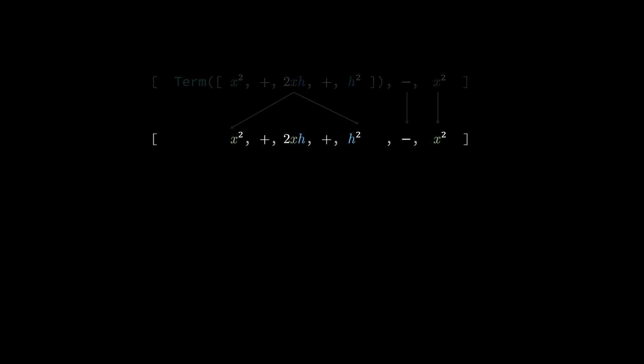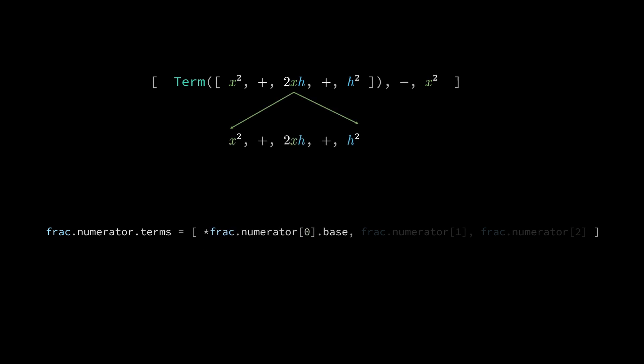The minus and x squared terms will continue on as before. The new array for the numerator drops the term component, and with it, the parentheses are dropped as well. Then, we can reconstruct the numerator again passing in the 2xh and h squared elements, and this will drop out the x squared terms. We can use the terms attribute of the numerator to reinitialize its array. The unpacking operator will place the elements of the binomial expansion into the new array for the numerator.